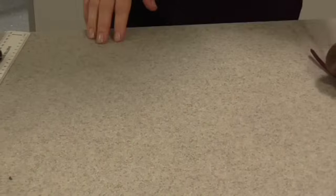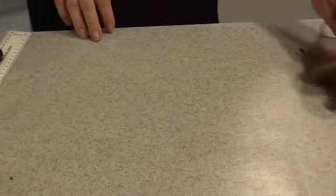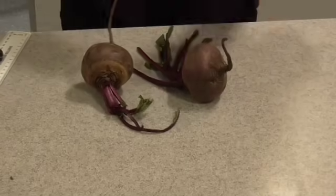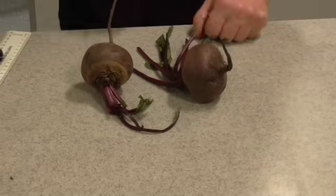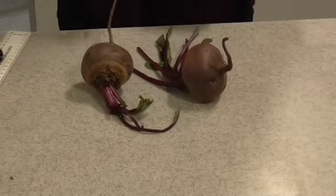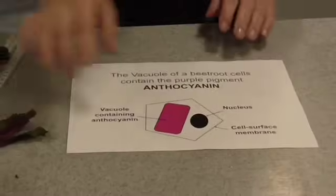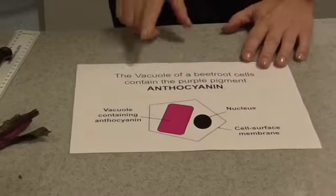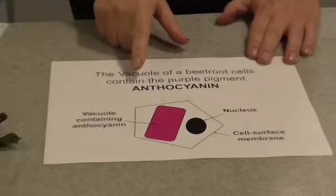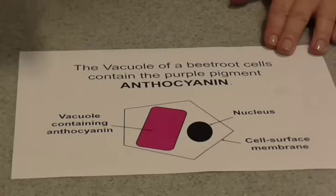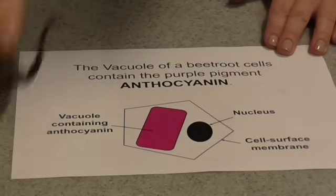The tissue we're going to use for this investigation is beetroot tissue. It has to be fresh beetroot — not pickled, not cooked. The reason we're using beetroot is that beetroot cells contain a red compound called anthocyanin. It's a purpley-red colour — it's what gives beetroot its lovely colour.